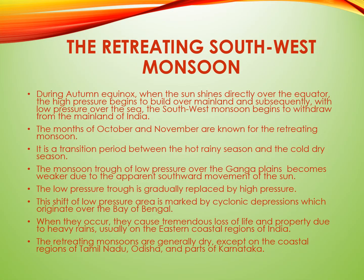By 1st September, with the apparent movement of the Sun towards the south, the low pressure in central India starts weakening and is no longer able to attract the monsoon winds towards land. During the autumn equinox, when the Sun shines directly over the equator, high pressure begins to build over the mainland. Subsequently, with low pressure over the sea, the southwest monsoon begins to withdraw from the mainland of India, starting from northern India in early October.